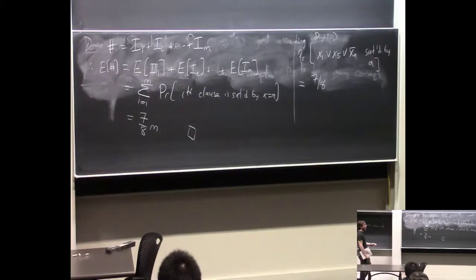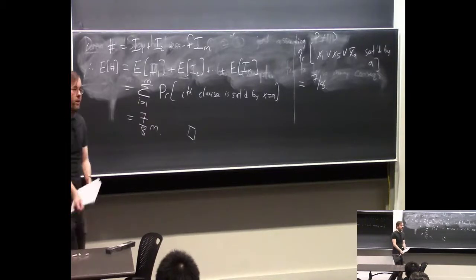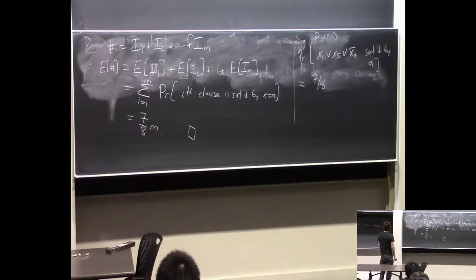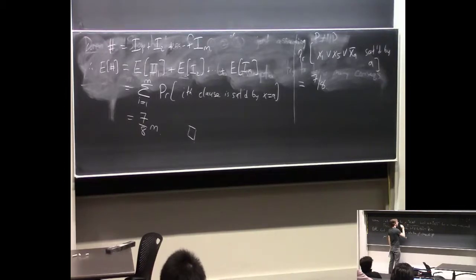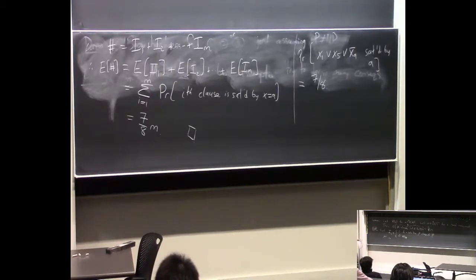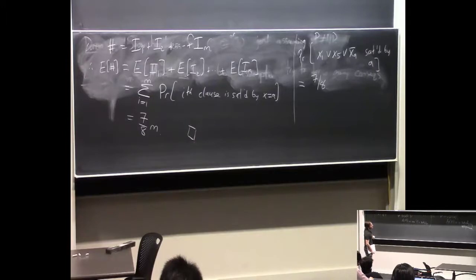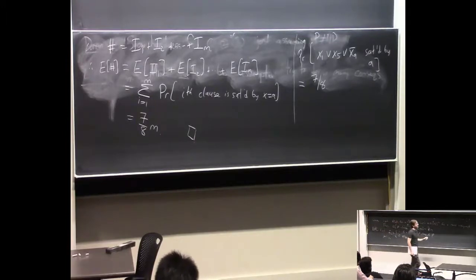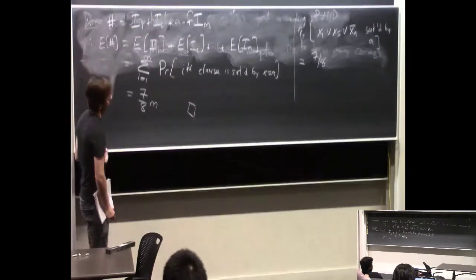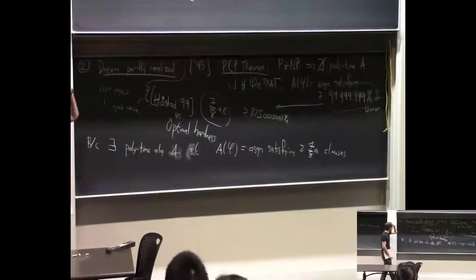Actually, everything should be about E3SAT — where every clause has exactly three distinct literals. That's an important point. Håstad's result is true even in the special case where it's E3SAT, where all clauses have exactly three literals. That's the better result because it says even the special case is hard. On the other hand, you would like to get the dumb random-assignment algorithm to work in the non-special case where you're allowed to have clauses of size one and two — and it's known there's an efficient algorithm with this guarantee in the general 3SAT case, though it's incredibly hard to prove, requiring computer-assisted proof from sometime in the 2000s.